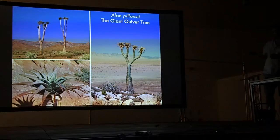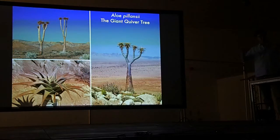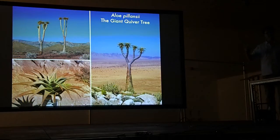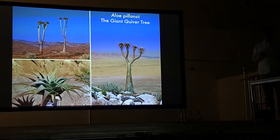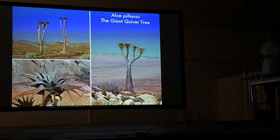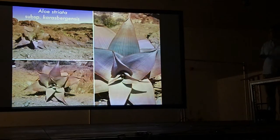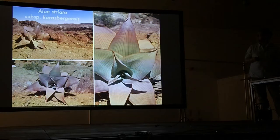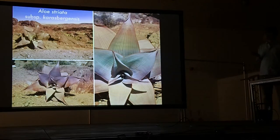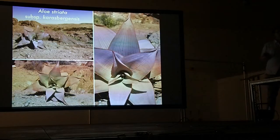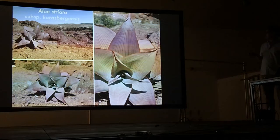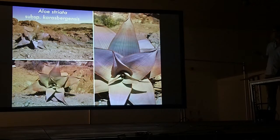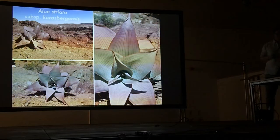These are absolutely staggering plants — the trunks can reach about a metre girth and they can grow to about 10 metres in height. Here's another really lovely aloe species, Aloe striata subspecies Karasbergensis. Aloe striata is quite easily identified by the red margin at the edge of the leaf — very characteristic, so quite easy to identify.